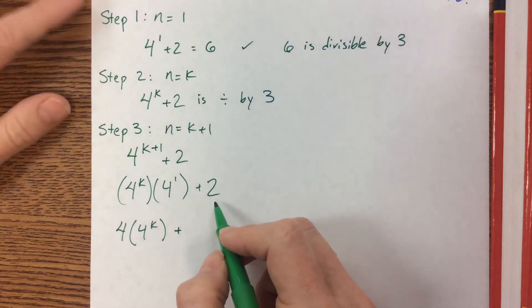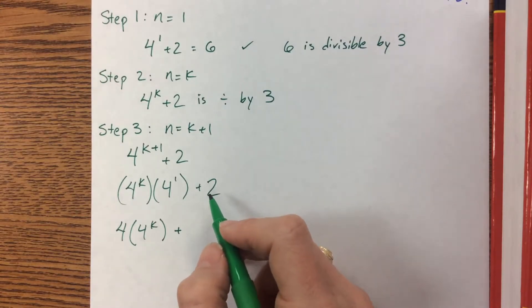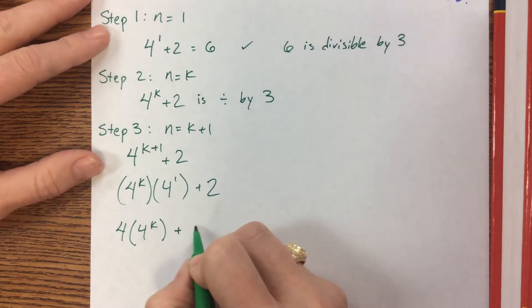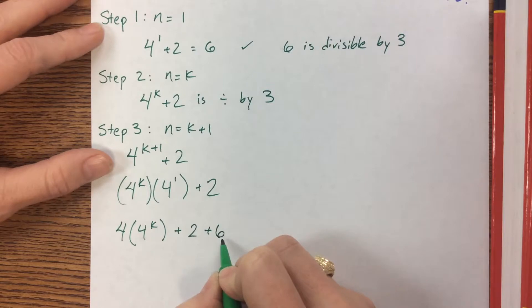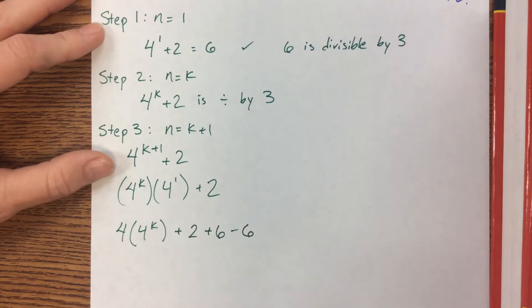When I do that though I can't just change a value but I could always add 0. So if I say well this, if I say 2, I can say plus 6 makes that 8 but then I can also say minus 6.